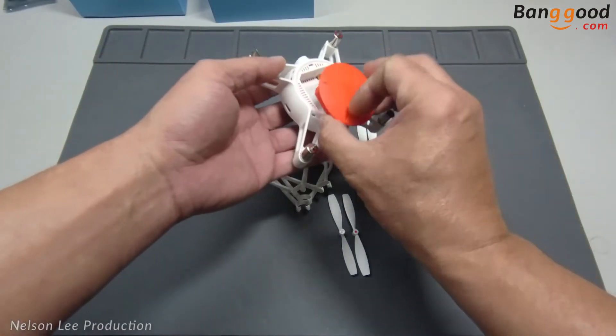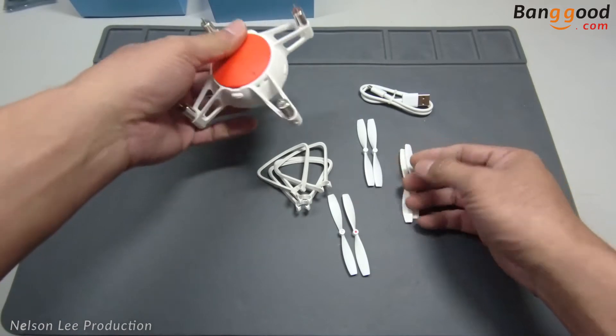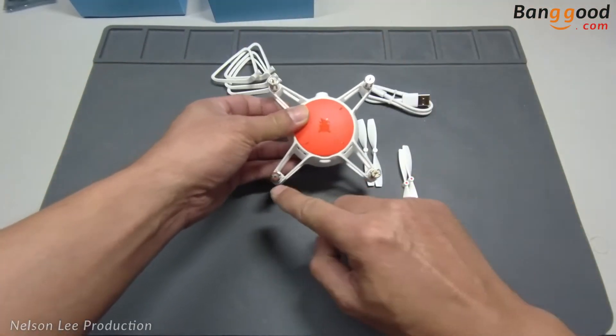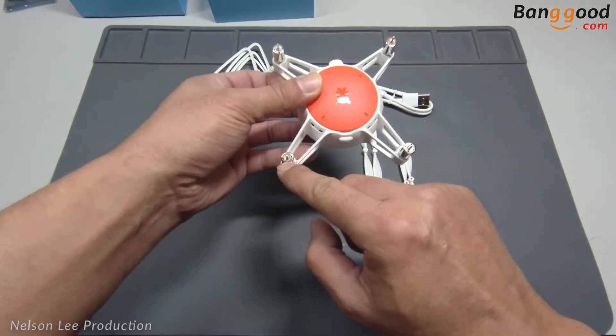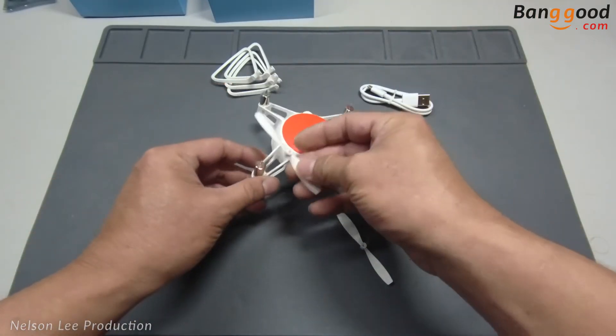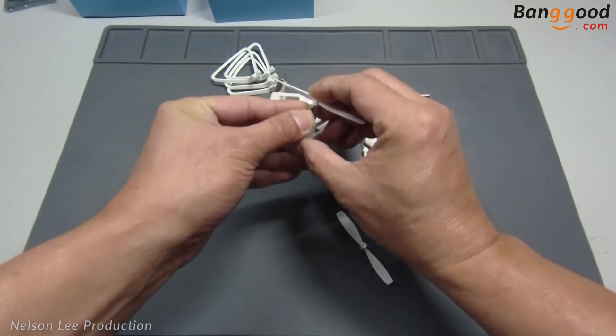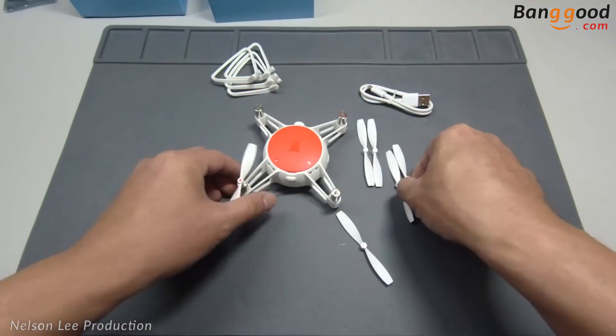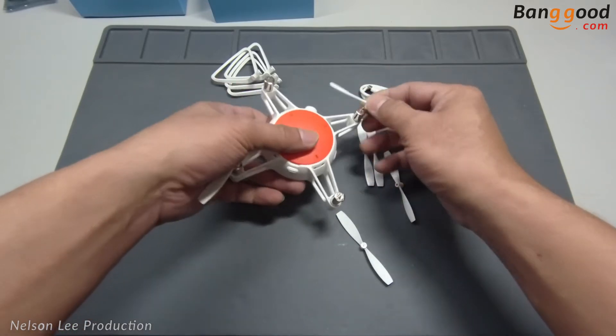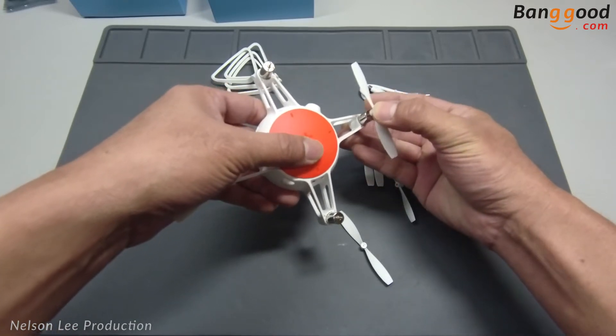The battery installation is very simple - just click it in and then install the propellers following the color. They have this red color here and this one is without red color, so we just follow the color and plug in. You need to download the app to your phone; it supports iOS and Android.